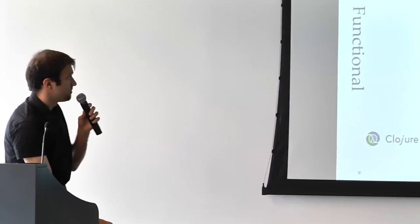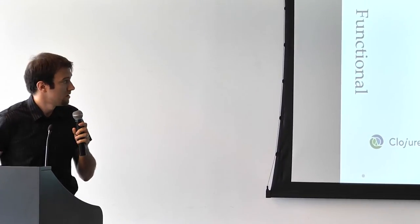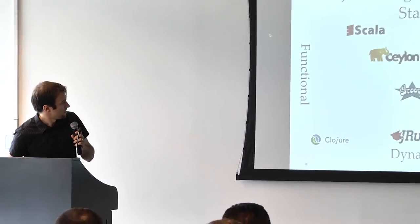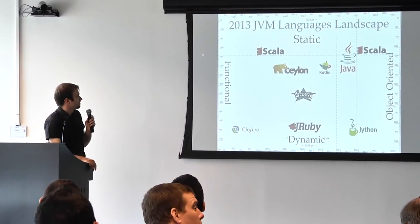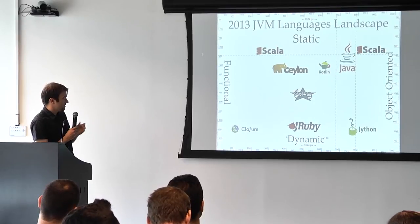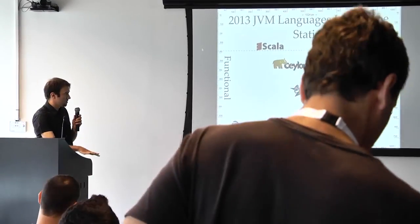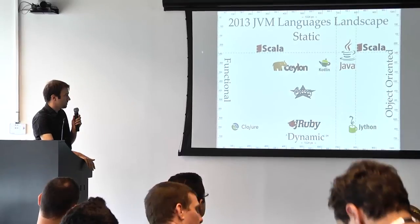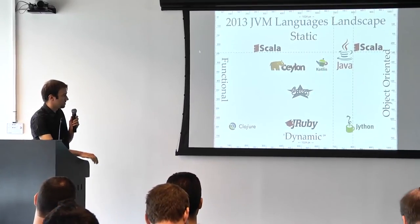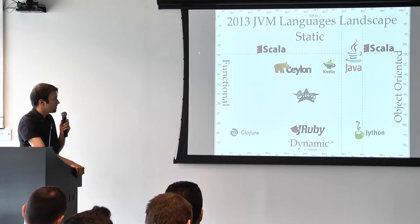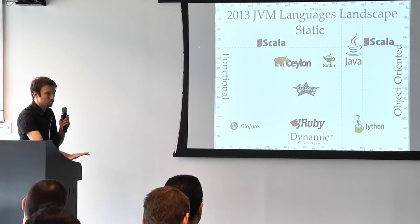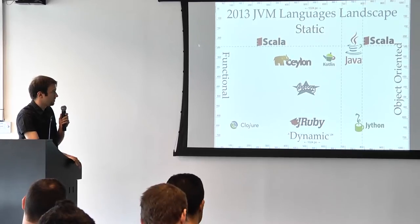So this is what the current JVM landscape looks like. We see that in addition to the languages that we are all familiar with, like Java, JRuby, and Jython, which are basically just ports of these languages to the JVM, we have many more new players that are actually not very new at this point.